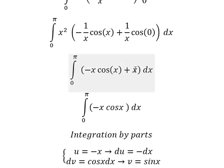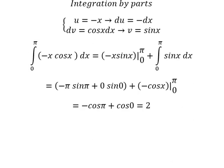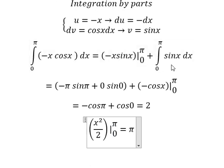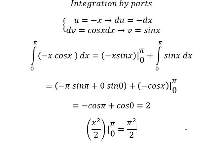Now the integration of x, that is x squared over 2, and we put the bounds from 0 to π. And then we have π squared over 2. And now we compile the answer.